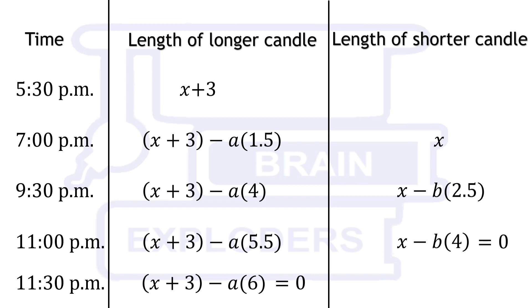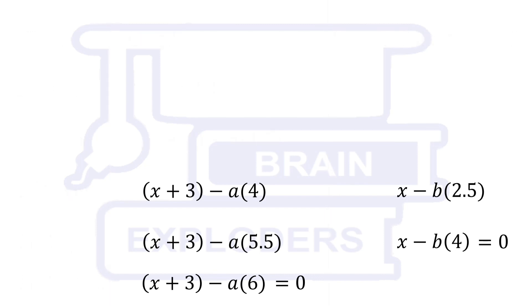Similarly, at 11:30 pm, longer candle burns out so x plus 3 minus 6a is equal to 0. According to question, at 9:30 pm, both candles are equal in length so let us put an equal sign here.